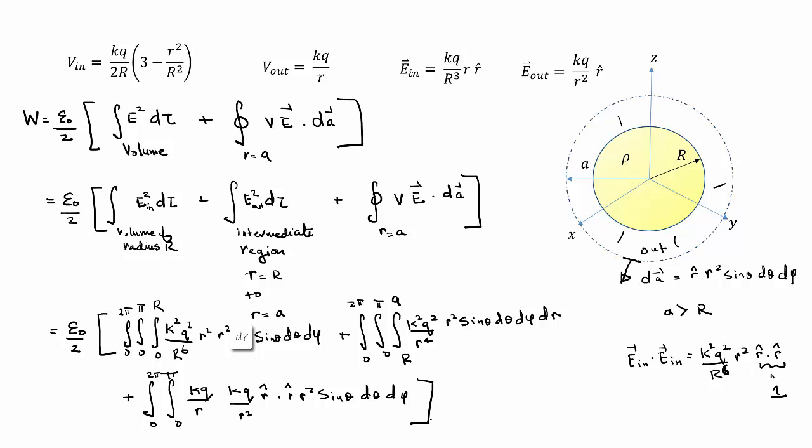So most of these integrals are redundant. Over here, sin theta d theta d phi gives you 4 pi. Same thing, it gives you 4 pi over here. It gives you another 4 pi when you integrate, but there's nothing left to integrate. This is all evaluated on the sphere of radius A. So the integrals here are very trivial. So let's do them very quickly and get the final answer we need.